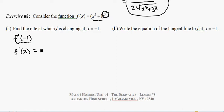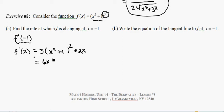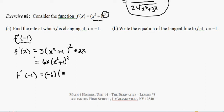We leave that inner function alone and take the derivative of something to the third power — that's 3 times that quantity to the second power, where that quantity is x squared plus 1. We multiply by the derivative of the inner function, which is 2x. Combining the 3 and the 2, we get 6x times (x squared plus 1) squared. Using this expression, f prime of negative 1 gives us negative 6, and (negative 1 squared is 1, 1 plus 1 is 2, 2 squared is 4), so our final derivative value is negative 24.